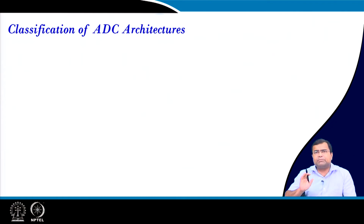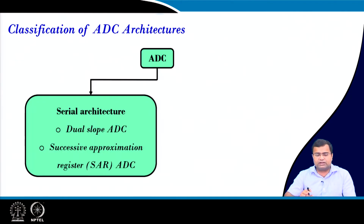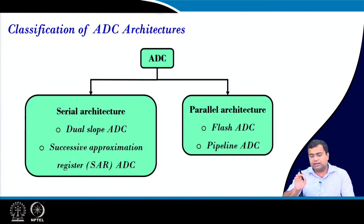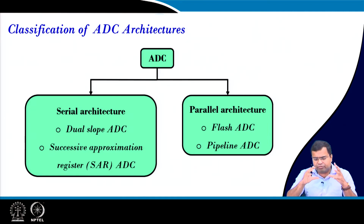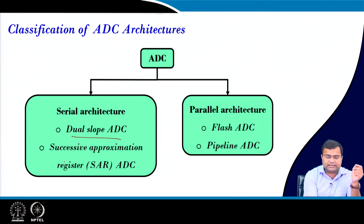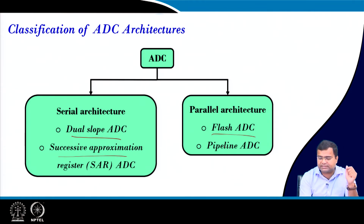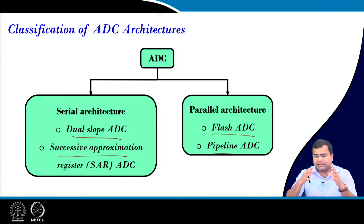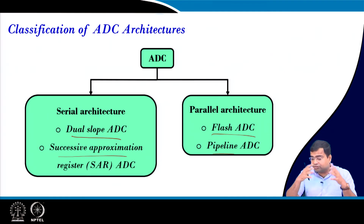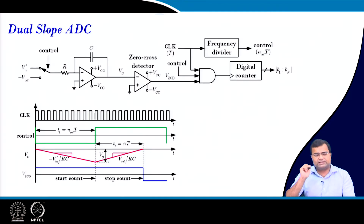The ADC can be classified into two categories: serial architecture and parallel. We will look at some well-known architectures: dual slope ADC, successive approximation ADC, parallel flash ADC, and pipeline ADC. We have not considered the sigma-delta ADC here, which is also a popular architecture, but this is for a basic understanding of ADC.